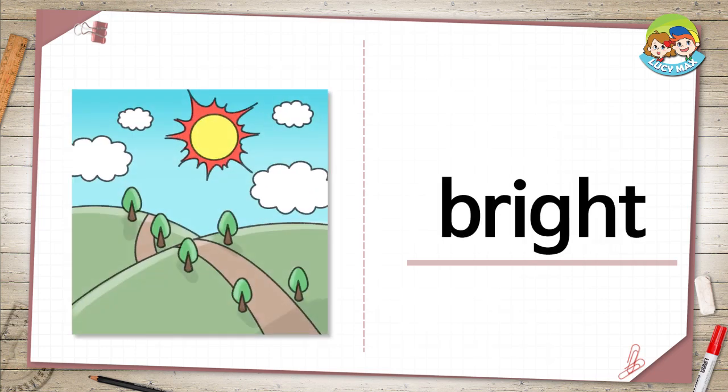Bright. It's afternoon, the sun is in the sky so it is bright. Bright is the opposite of dark. We can see well when it is bright. Is it bright outside?